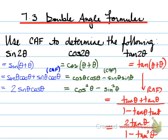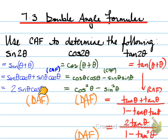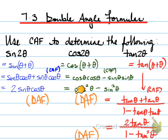These are all known as the DAF (Double Angle Formula). So 2 sine θ cos θ is the simplified form of sine 2θ. Cos 2θ equals cos² θ minus sin² θ, or 1 minus 2 sin² θ, or 2 cos² θ minus 1. Finally, that is the value for tan 2θ. But you don't even need to memorize that, because you can use CALF to determine those values.